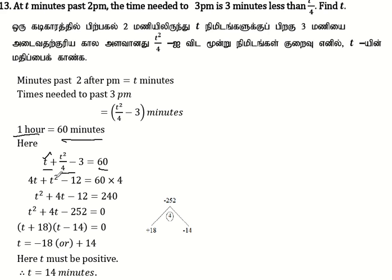Multiply by 4: 4t plus t² minus 12 equals 60 times 4.